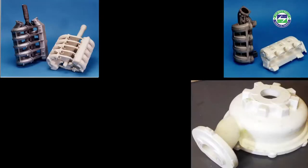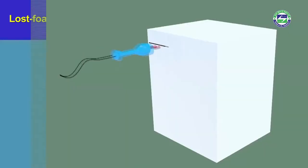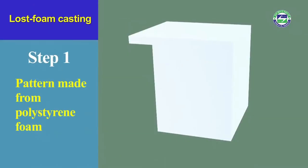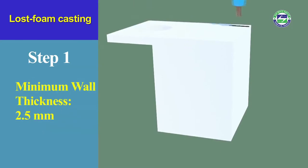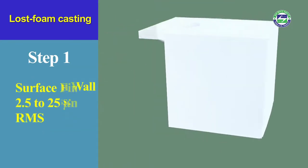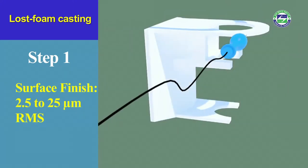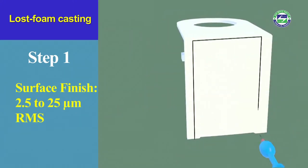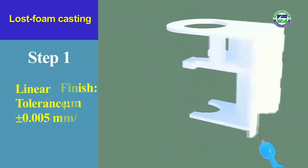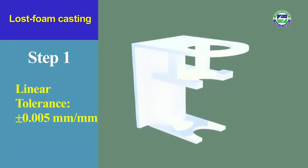Lost foam casting is a type of evaporative casting process. First, a pattern is made from polystyrene foam. The minimum wall thickness is 2.5 mm. Typical surface finishes are from 2.5 to 25 µm root mean square.